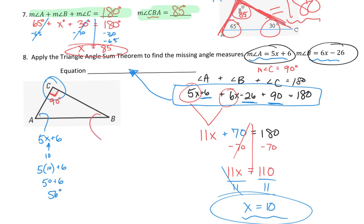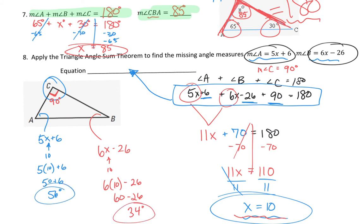Angle B was 6x minus 26. Plugging in 10 for x: 6 times 10 minus 26 equals 60 minus 26, which is 34 degrees. So we could find all the missing angles after finding x.